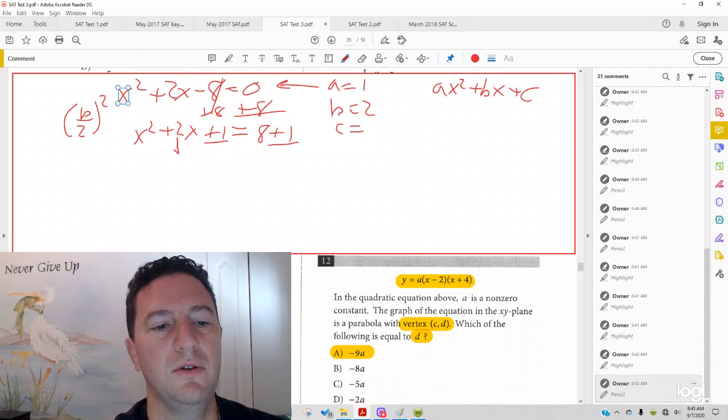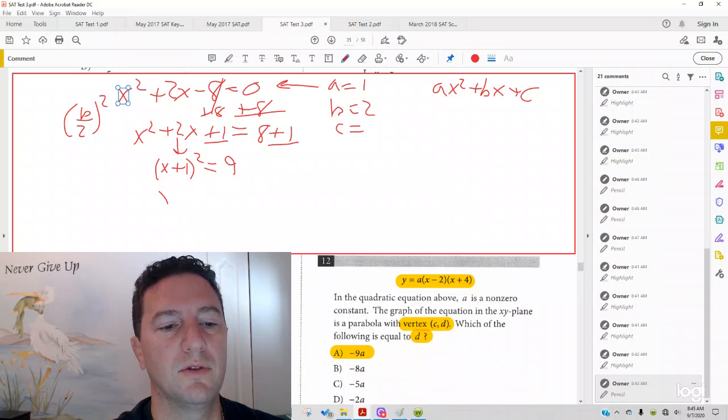Now I can write this left side as a perfect square. To write the left side as a perfect square, all you do is take half of the middle, so it's a positive 2, so it's going to be a positive 1. So it's x plus 1 quantity squared equals...on the other side, you have a 9. Then you subtract your 9 from both sides, x plus 1 quantity squared minus 9 equals 0.